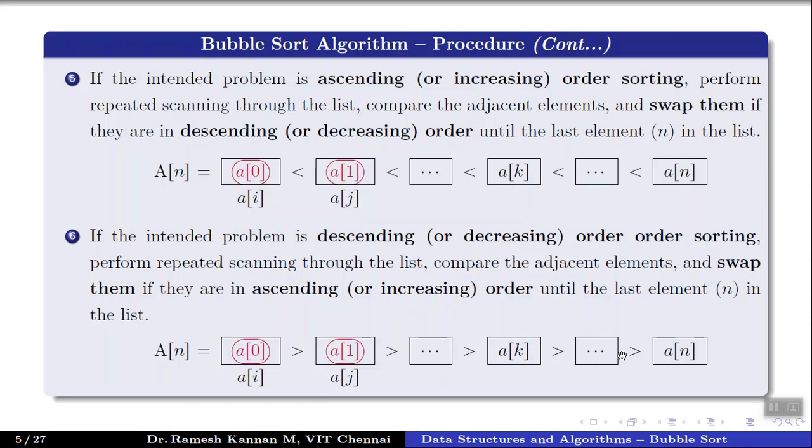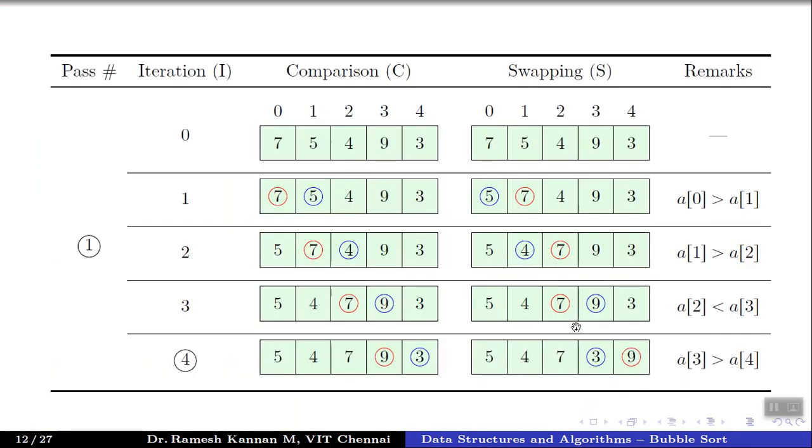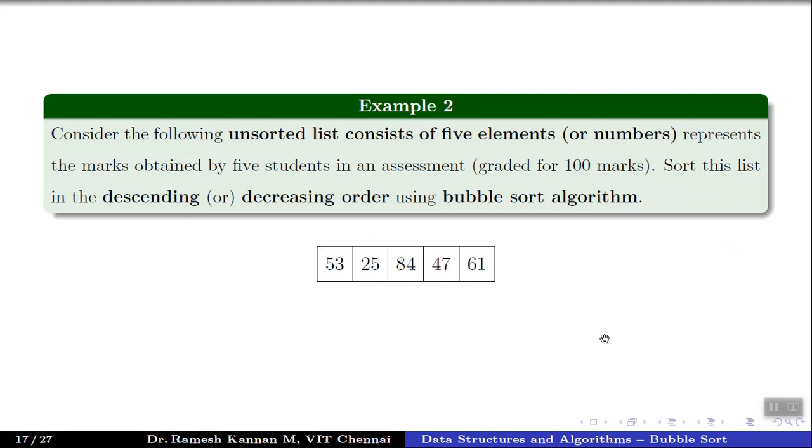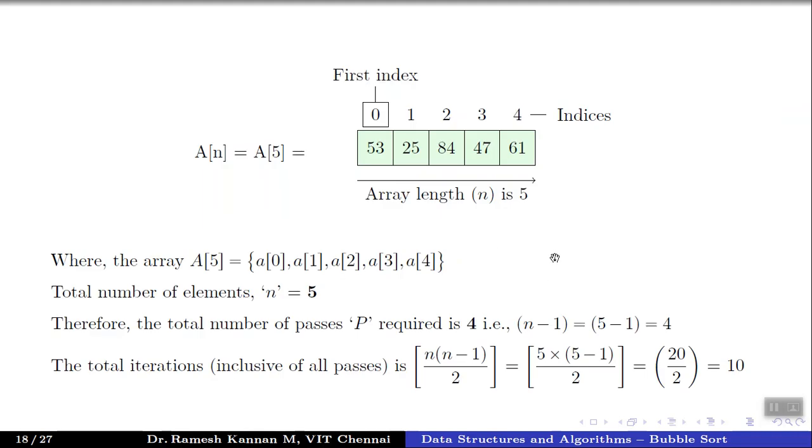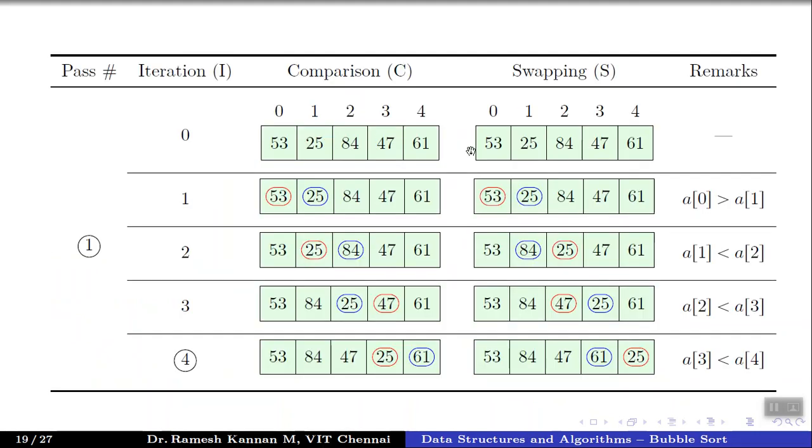Let's dive into example two. We have five entries, an array of five elements, each representing the marks obtained by a student in an assignment assessment out of 100. We'll be doing descending order sorting using bubble sort algorithm. This is the typical example that we have already described but with a change in values. In this case we'll be doing descending order.